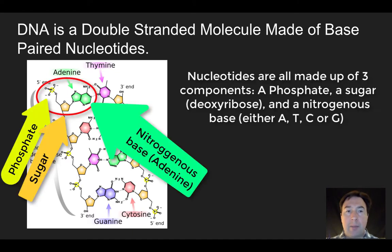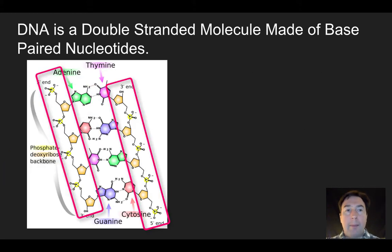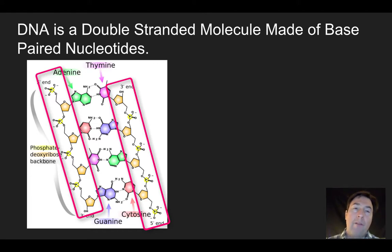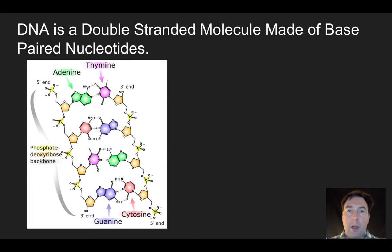When we talk about the structure of a nucleotide, all nucleotides have the same structure: a phosphate, a sugar, and a nitrogenous base. In this case the nitrogenous base is adenine, and the sugar is deoxyribose. Therefore, the backbone of DNA — the two outer portions of our ladder — goes phosphate, sugar, phosphate, sugar. That's referred to as a phosphate-deoxyribose backbone or phosphate-sugar backbone.